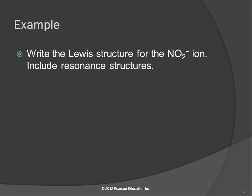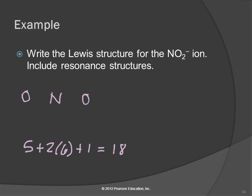NO₂⁻ — that kind of looks like SO₂, doesn't it? Let's put the nitrogen in the middle and an oxygen on each side. Nitrogen has how many valence electrons? Nitrogen has 5, and the oxygens each have 6, so that's 5 plus 12. And then there's the charge — we need to add one electron for the negative charge. So that's 18 electrons total.